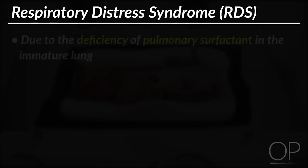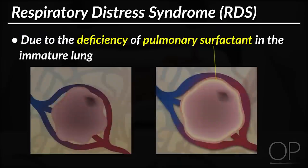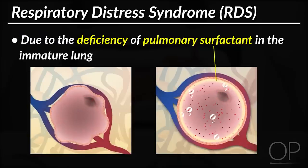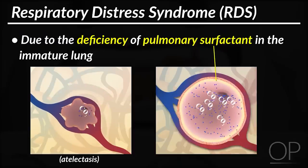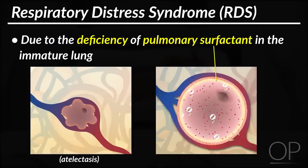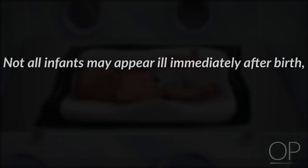RDS is due to the deficiency of pulmonary surfactant in the immature lung. Surfactant is a phospholipid that decreases the alveolar surface tension, which helps with alveolar expansion and decreases the risk of atelectasis. Not all infants may appear ill immediately after birth.